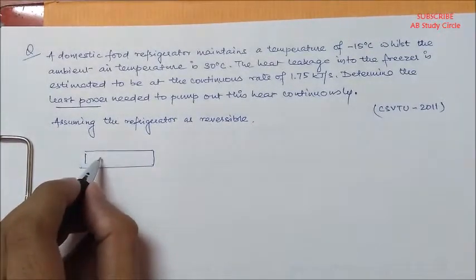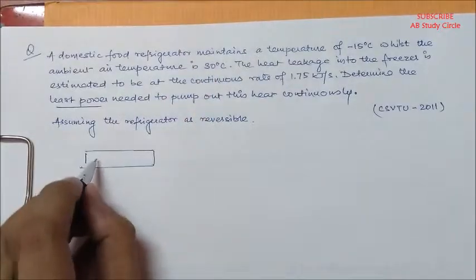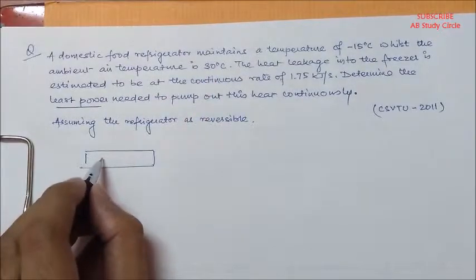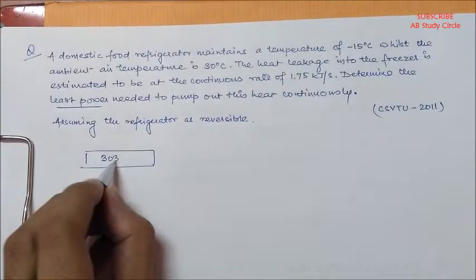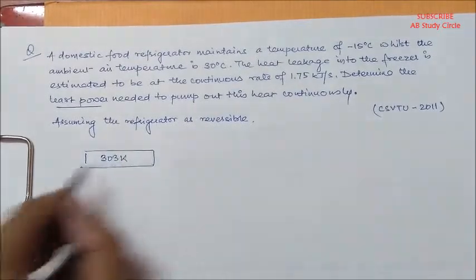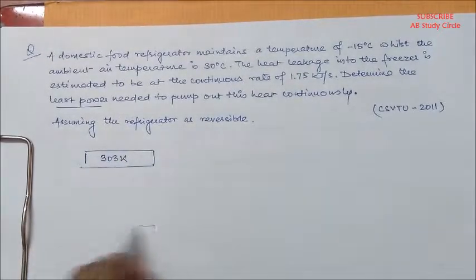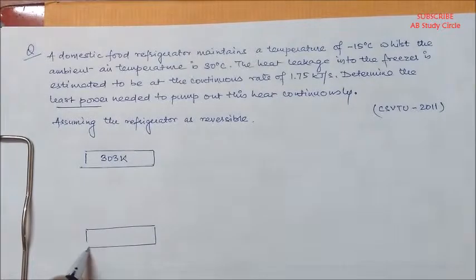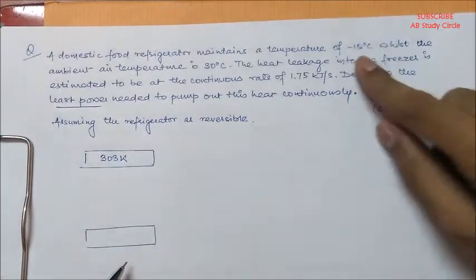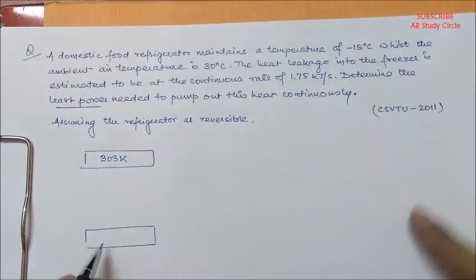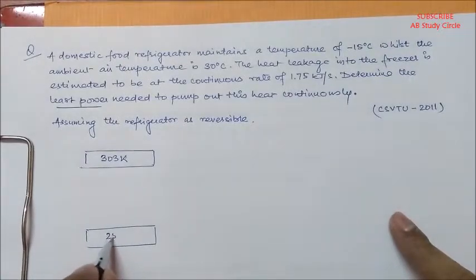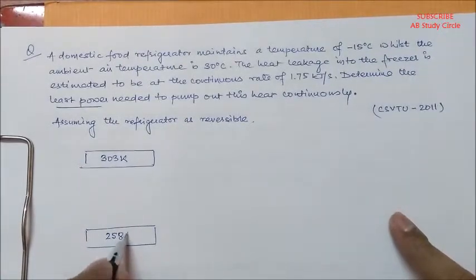See, this is your ambient temperature which is maintained at 30 degree Celsius. I will convert it into 303 Kelvin. And the freezer temperature which is the minimum temperature, that is minus 15 degree Celsius. Converting it into Kelvin, it will be 258 Kelvin.